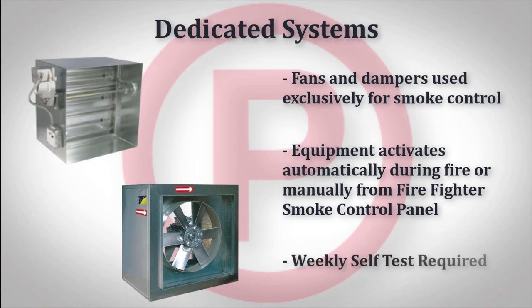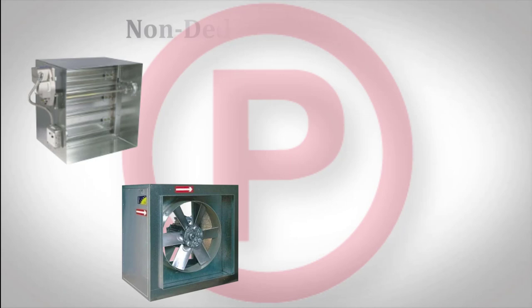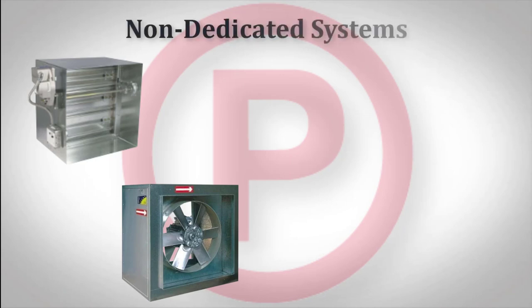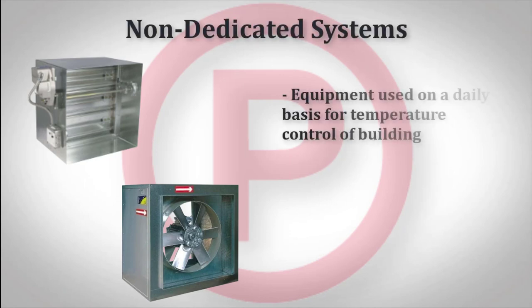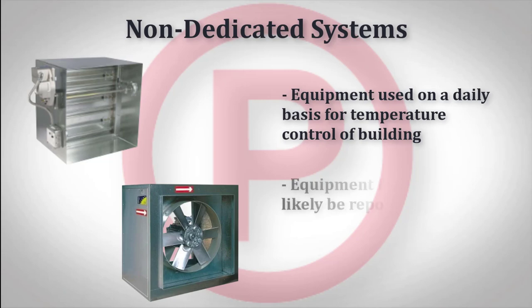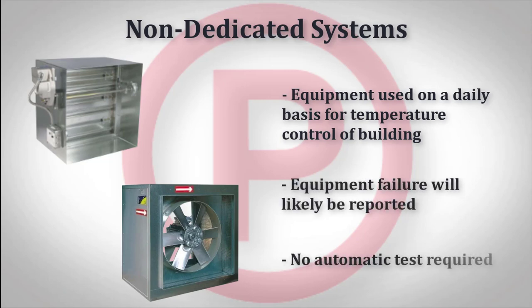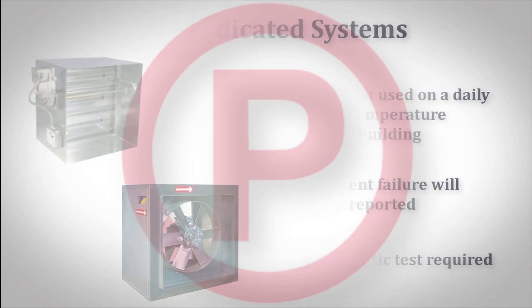A weekly self-test is required to assure it's operable. The second configuration is a non-dedicated system. In this type of system, fans, air handling units, and dampers are used on a daily basis for temperature control of a building. Since this equipment is used on a daily basis, it is considered more reliable and does not require a dedicated weekly test.